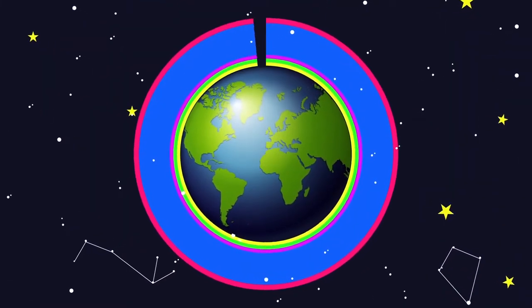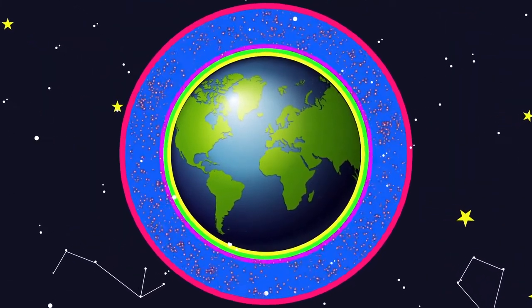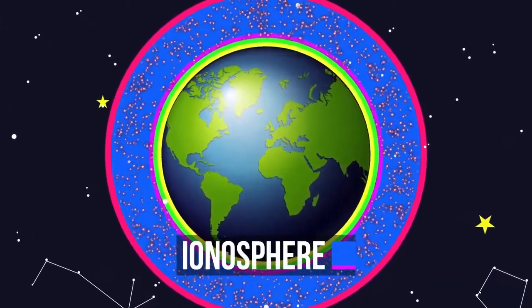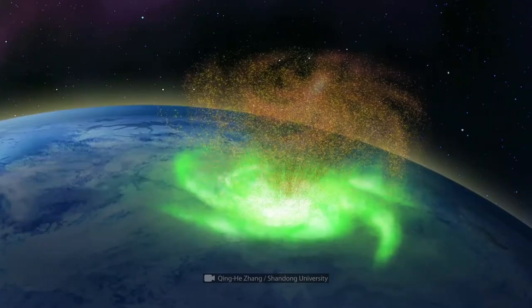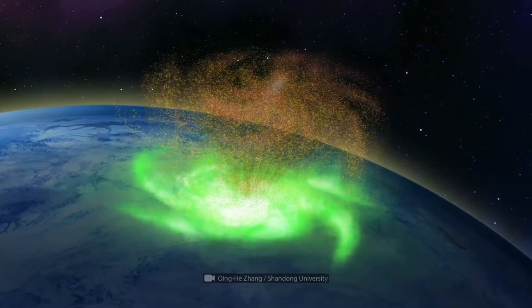In early March, the year 2021, scientists first noticed a space hurricane with electron rainfall in the Earth's ionosphere. They managed to observe a swirling mass of plasma a thousand kilometers wide above the North Pole.